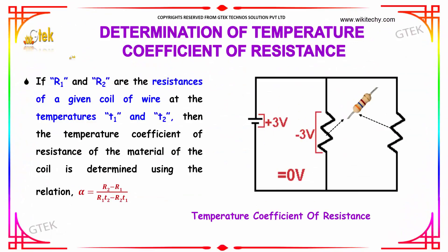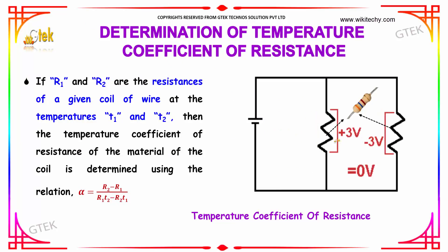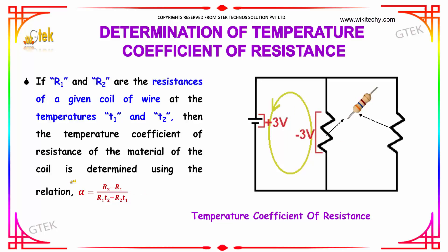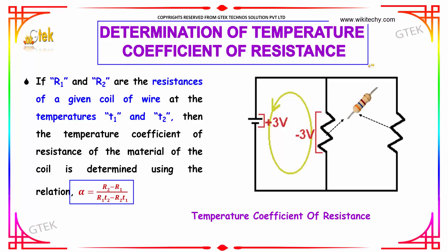If R1 and R2 are the resistances of a given coil of wire at temperatures T1 and T2, then the temperature coefficient of resistance of the material of the coil can be determined using the formula: alpha is equal to the difference in resistance divided by the quantity R1 into T2 minus R2 into T1. This gives the determination of the temperature coefficient of resistance.